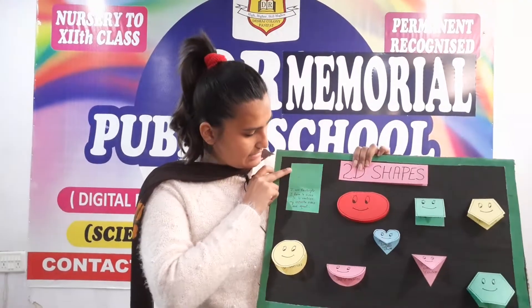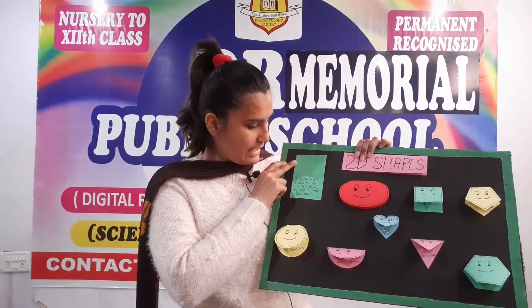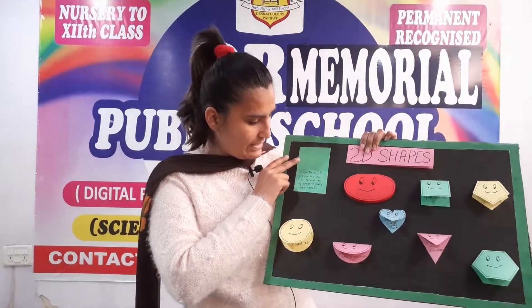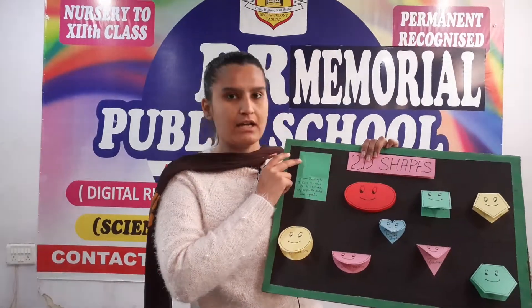Firstly, I am rectangle. I have 4 sides and 4 vertices. My opposite sides are equal.